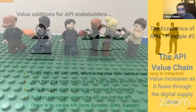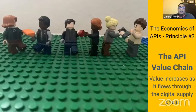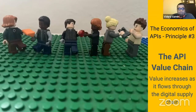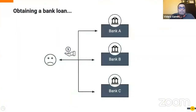Increased value here also results in increased monetization opportunities for your APIs. That brings us to Principle Number Three: the API value chain. Value increases as it flows through the digital supply chain.